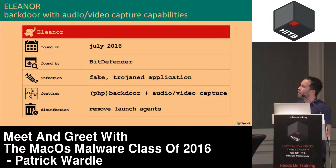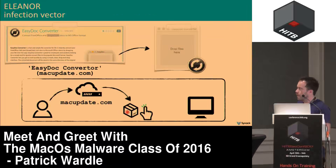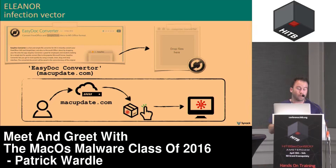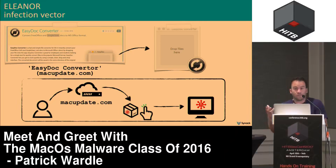The next sample is Eleanor, discovered in July by Bitdefender. It's a PHP-based backdoor that exposes infected computers as hidden Tor services. In terms of its infection vector, the Mac malware authors essentially took over an abandoned application on macupdate.com called easy.converter, which legitimately converted documents. They created a new malicious instance of this application. If legitimate users went to download what they thought was a converter application and ran it, they would become infected with this malware.